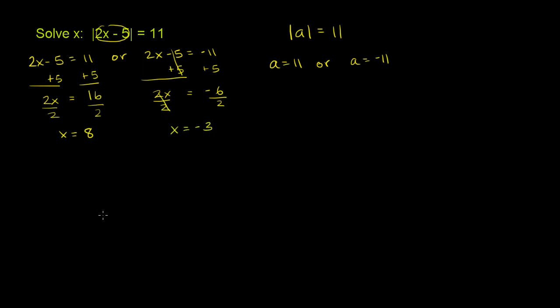So we've gotten two solutions, depending on whether this thing in here is either equal to 11 or negative 11. We got x could be equal to 8, in which case 2x minus 5 would be 11. Or we have x is equal to negative 3, in which case 2x minus 5 is equal to negative 11.